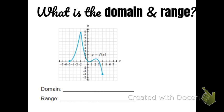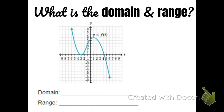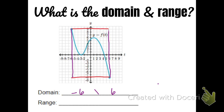Let's look at another one. Given this graph, let's create that picture frame around it. The domain is where the graph goes left to right — the x values. This whole graph goes from negative 6 all the way to positive 6. So x is scrunched in between negative 6 and positive 6. The range is the y values — it stretches all the way down to negative 8 and goes all the way up to 9, so y is scrunched in between negative 8 and 9.